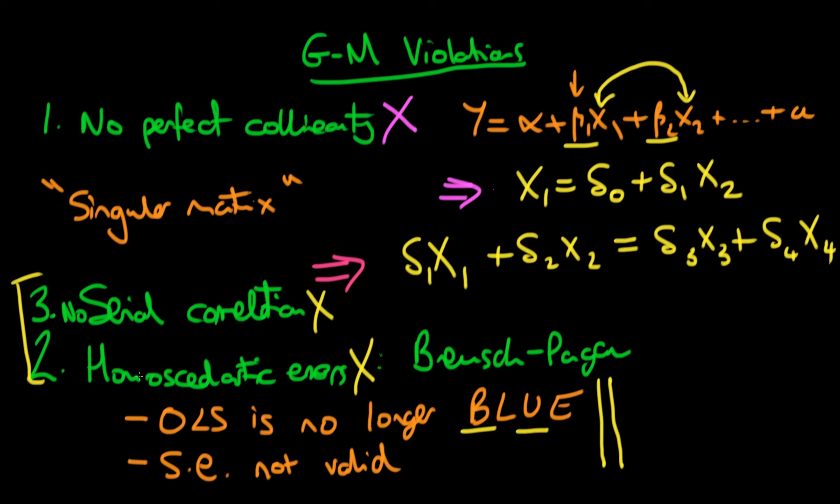then I get exactly these two problems here as we have with the violation of homoscedastic errors. So again, we can diagnose whether our model has serial correlation using either the Durbin-Watson test or the LM test, which is sometimes called the Breusch-Godfrey test. And if we do have serially correlated errors, we know that OLS is no longer BLUE. There are other better linear unbiased estimators than OLS. And also the standard errors which are reported as default are no longer valid. So that's a particular problem which comes about as a result of having serially correlated errors.